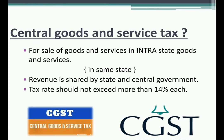The second type is CGST — Central Goods and Service Tax. CGST also applies to the sale of goods and services in intra-state transactions. The central government sits above the state, so CGST is the tax classified for the central government. Revenue is shared by both state and central government. The key rule is that the tax rate should not exceed more than 14% each — meaning neither the state government nor the central government should collect more than 14% of sales.